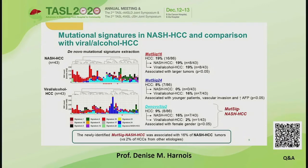They hypothesized that this de novo signature could be specific to a NASH insult and named it mutation signature NASH HCC. They identified this novel mutation signature which was associated with the tumors of NASH etiology in 16% of cases, as opposed to 2% of HCCs which were from other etiologies.